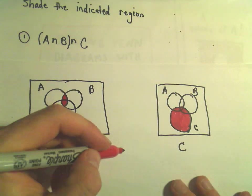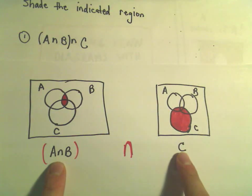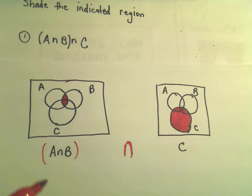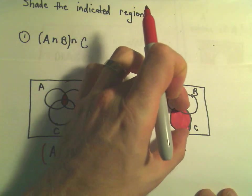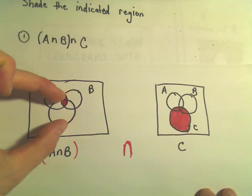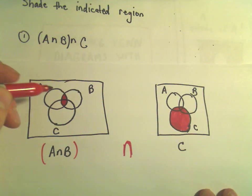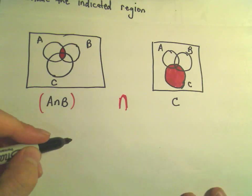And remember when we do the intersection of these two sets, because that's what we're doing, we're doing the intersection of A and B with C. Now we shade the overlap. So basically, what regions are colored in both pictures? And you can almost imagine putting this diagram over top of the other one. The stuff that would be shaded in both pictures, that's going to be our final solution here.